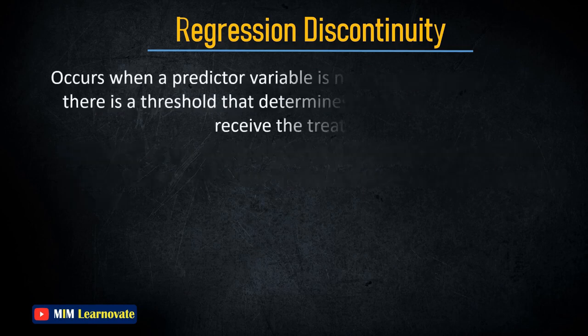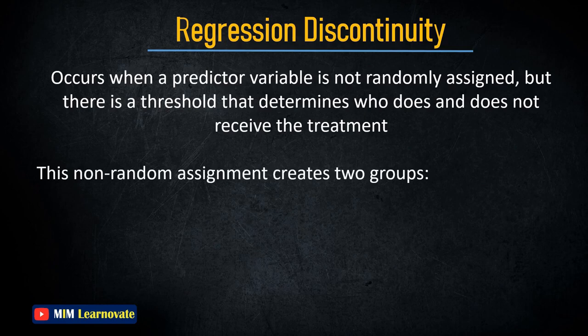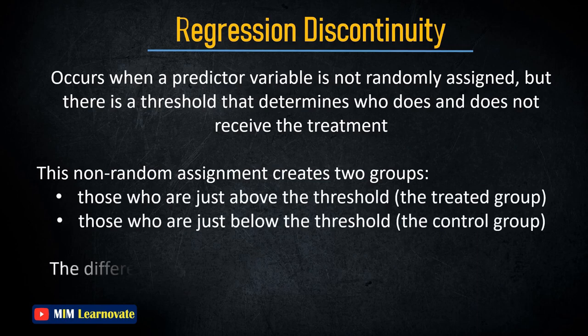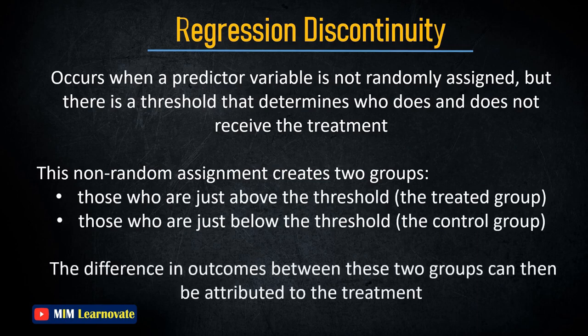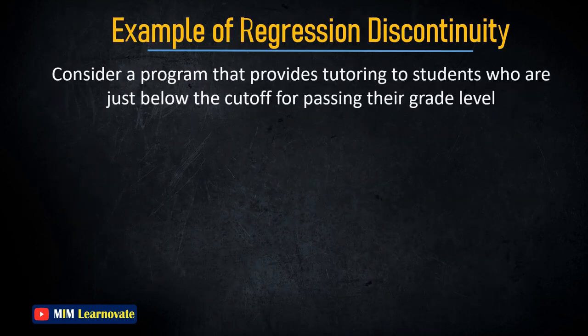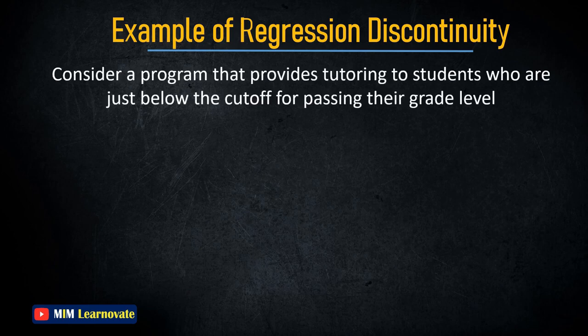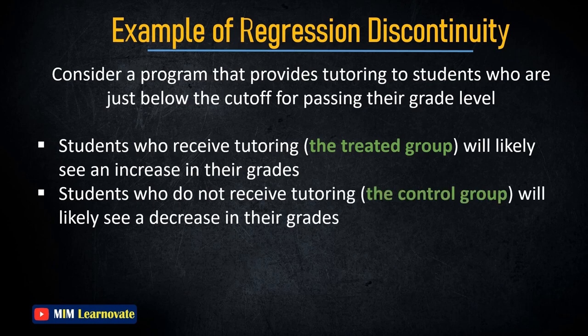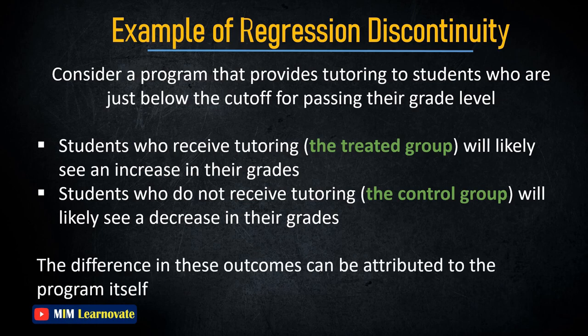A regression discontinuity occurs when a predictor variable is not randomly assigned but there is a threshold that determines who does and does not receive the treatment. This creates two groups: those just above the threshold (the treated group) and those just below (the control group). The difference in outcomes between these two groups can be attributed to the treatment. For example, a tutoring program for students just below the cutoff for passing their grade level would likely show an increase in grades for the treated group and a decrease for the control group.